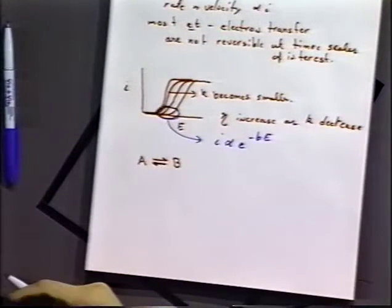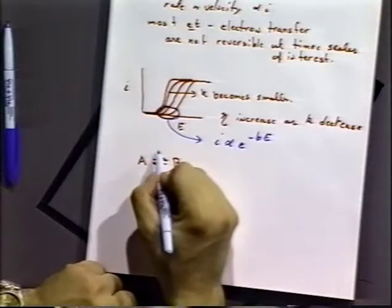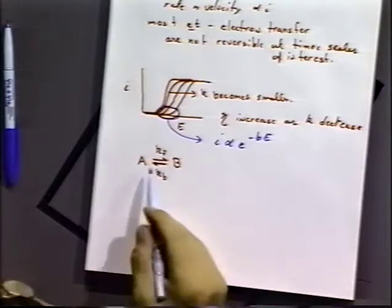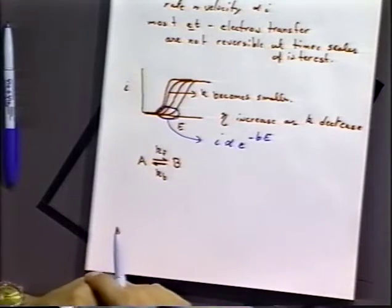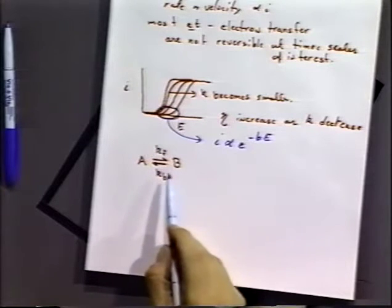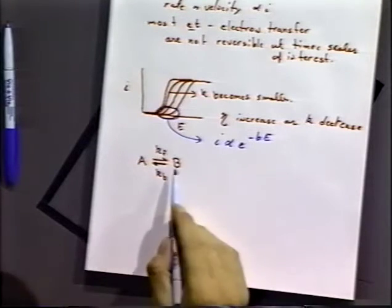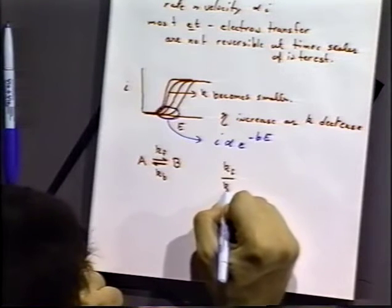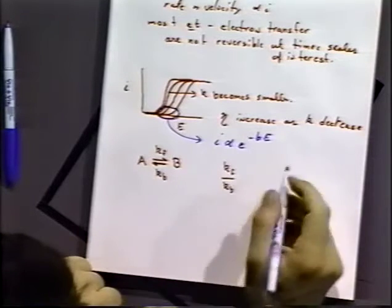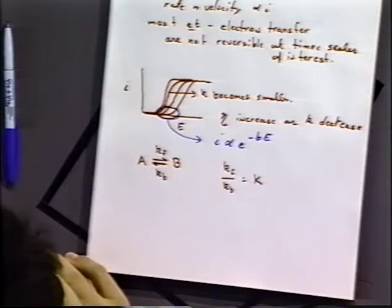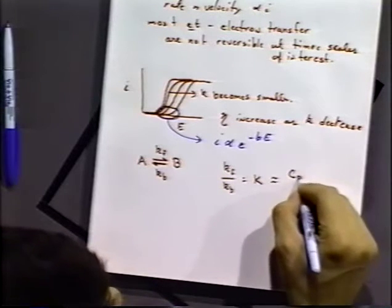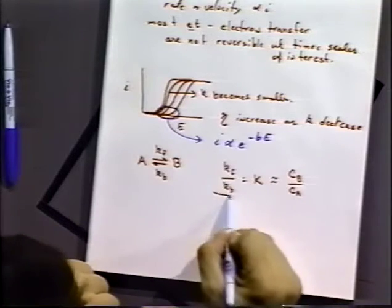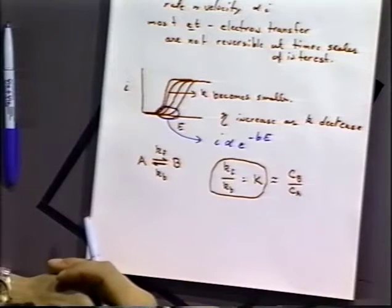Suppose we have a reaction A going to B. A and B can be at equilibrium or not, but if we allow them to come into equilibrium, there will be two rates of reaction. One is characterized by a rate constant K_F — the rate of conversion of A to B — and the back rate K_B, the rate of conversion from B to A. The ratio K_F over K_B is equal to the equilibrium constant, and is generally proportional to the concentration of B over concentration of A.